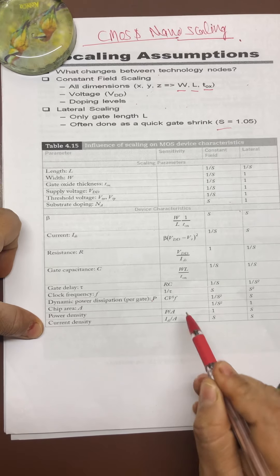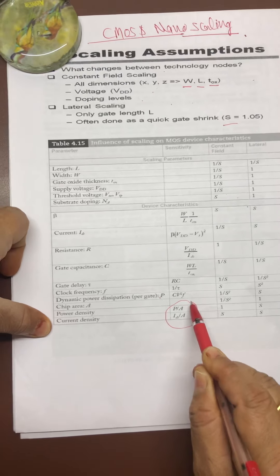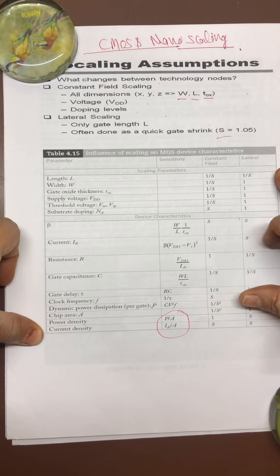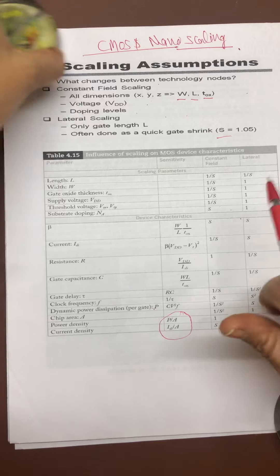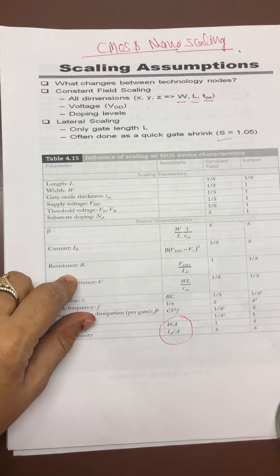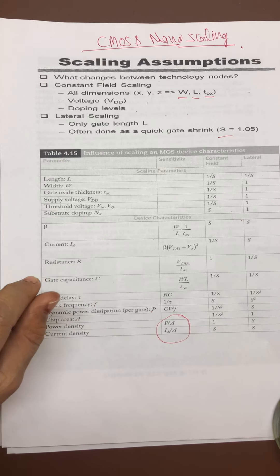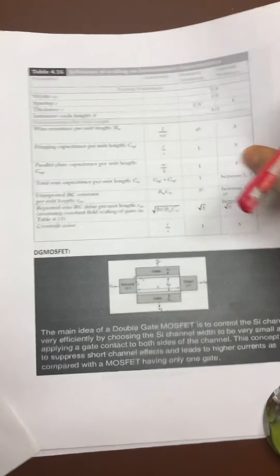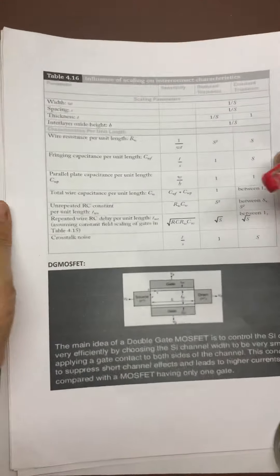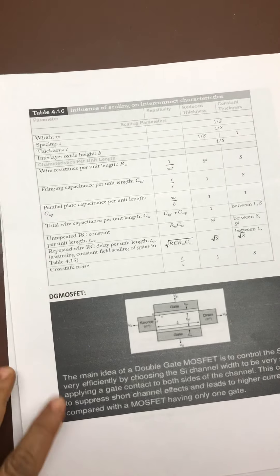Many students make mistakes while evaluating both the densities in CMOS scaling. After this scaling, that is particular device characteristic scaling, apart from this one more scaling is there that is called interconnect characteristic scaling.